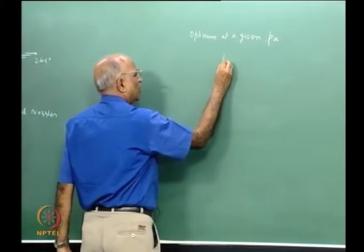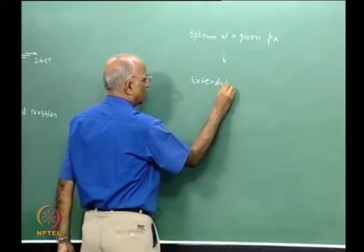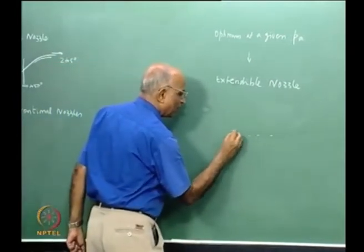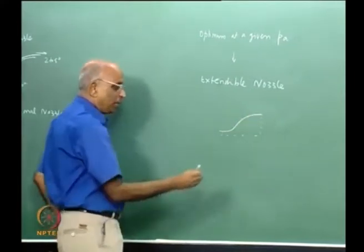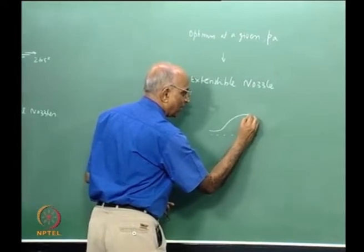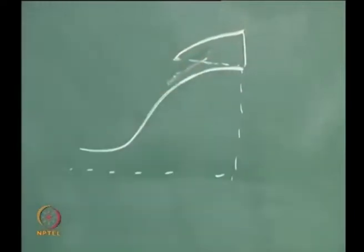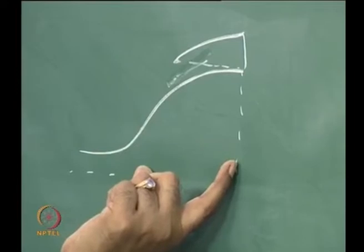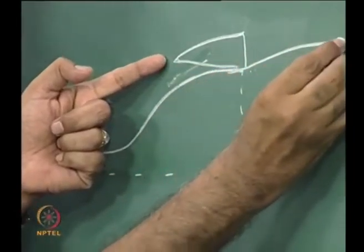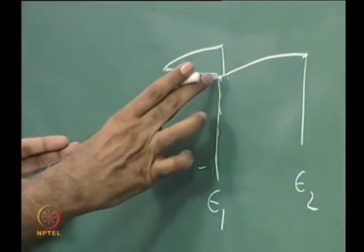Can I have something like an extendable nozzle? Suppose I have a nozzle operating at lower altitudes or higher pressures, and I want to expand it out to a higher area ratio at altitude. I initially store an extension segment folded on top of the nozzle. At low altitude I use the initial short nozzle, and at higher altitude I push the stored extension out, locking it in place. The nozzle length increases and the area ratio increases.